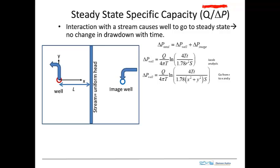For shallow wells, the way they reach steady state is by interacting with a nearby stream. In this situation, there's a pumping well here and a stream shown by the blue band. When the well reaches steady state, it is interacting with that stream, and that interaction is what allows it to reach steady state.